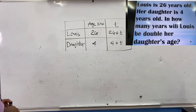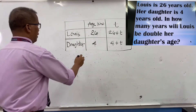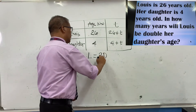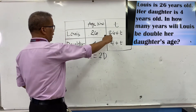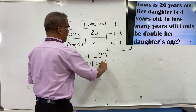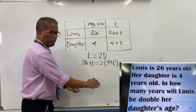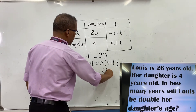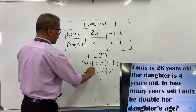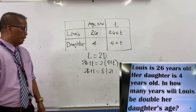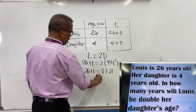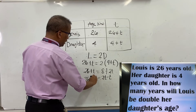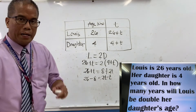In how many years will Louise be double her daughter's age? We write the linear equation: 26 plus t equals 2 times (4 plus t). Distributing: 2 times 4 equals 8, and 2 times t equals 2t. Copying 26 plus t, and combining similar terms, we bring t to the other side: 26 plus t equals 8 plus 2t, giving 2t minus t.